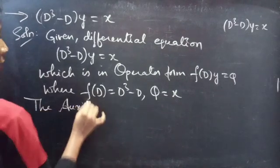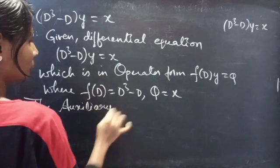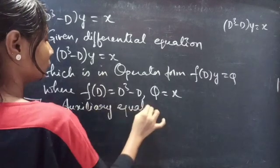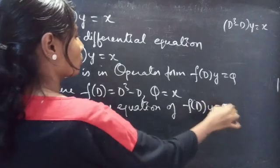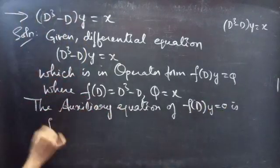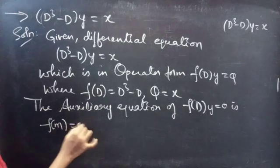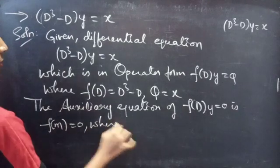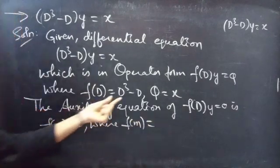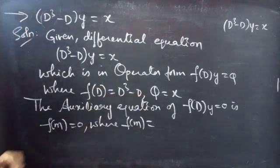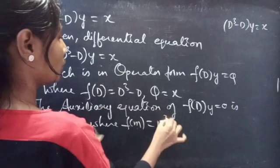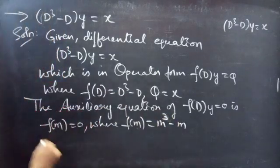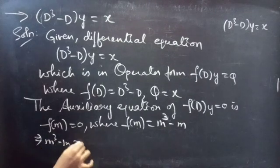Let's start with yc. The auxiliary equation of f(D)·y = 0 is f(m) = 0, where f(m) equals — since f(D) = D³ - D — we replace the differential operator by m to get f(m) = m³ - m. So the auxiliary equation becomes m³ - m = 0.